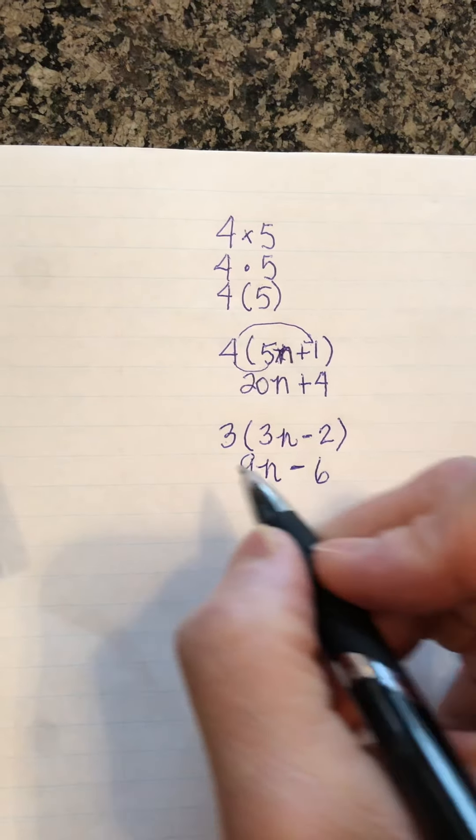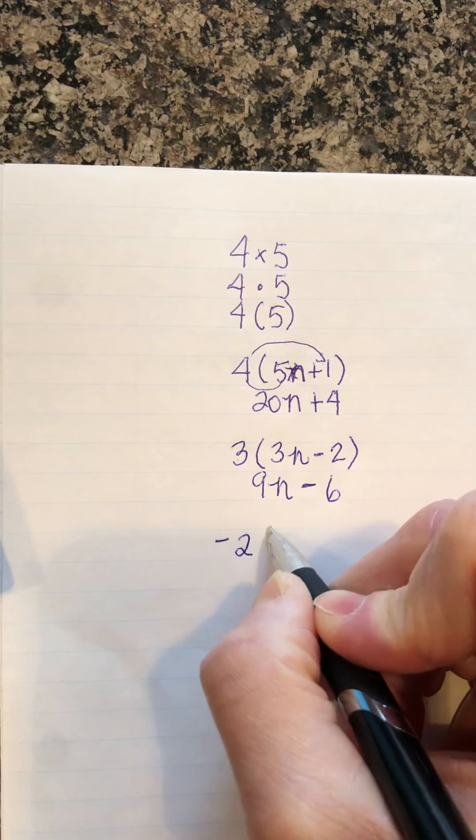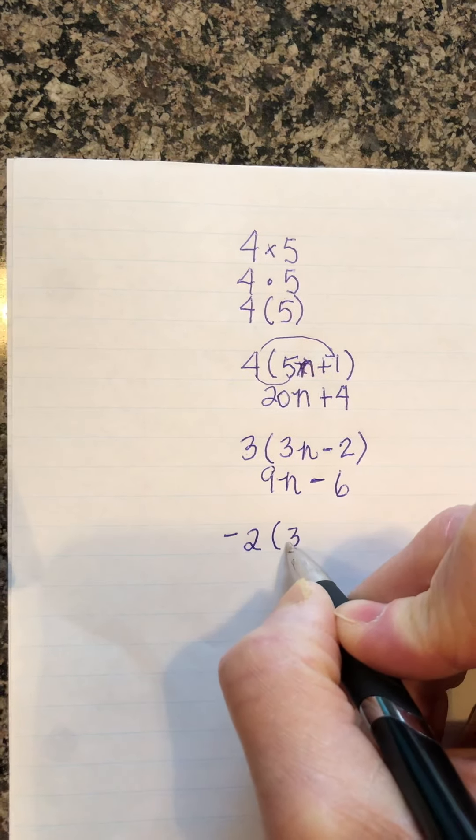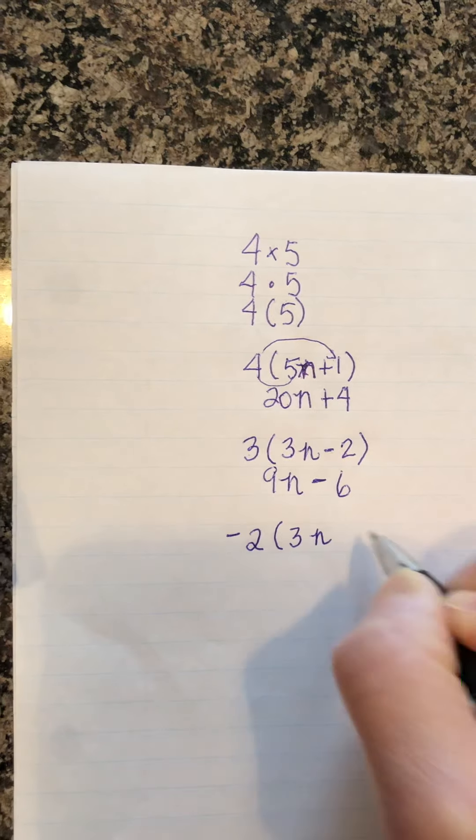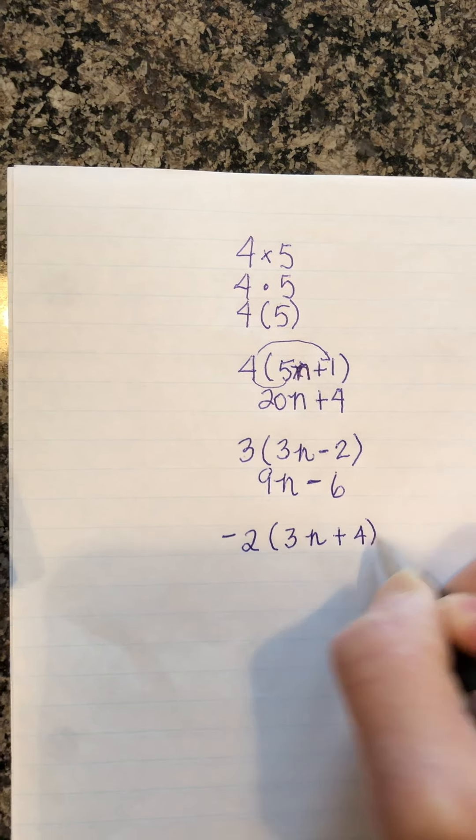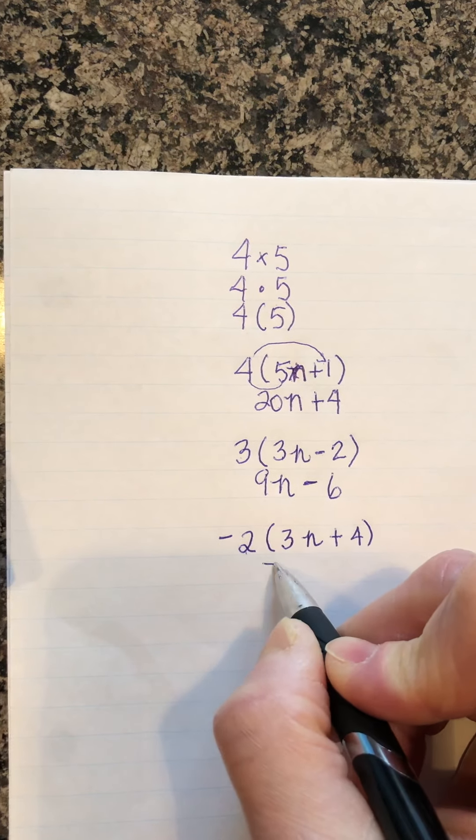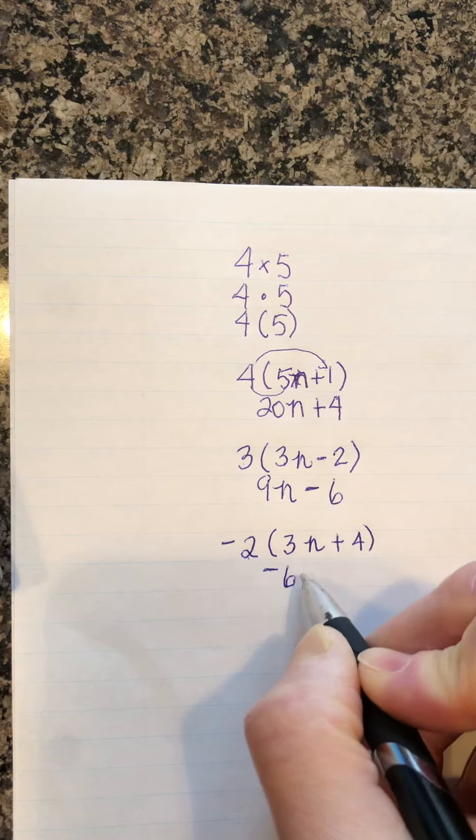Sometimes we can even have an integer. So I can go negative 2 times 3n plus 4. So I can go negative 2 times 3 is negative 6, because a negative and a positive is negative.